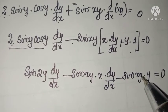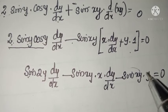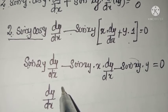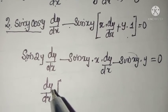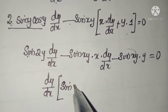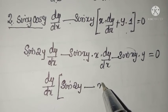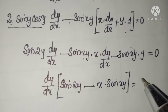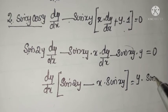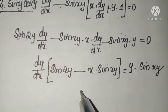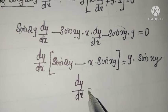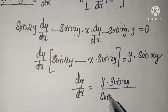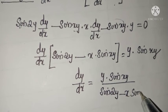Listen: this is a sin function, so don't confuse y into y as y squared. Collect dy by dx terms together and take common outside: dy by dx into sin 2y minus x sin(xy) equals y sin(xy). So dy by dx equals y sin(xy) divided by sin 2y minus x sin(xy).